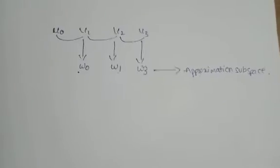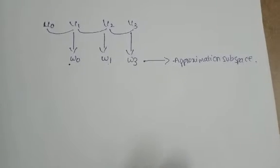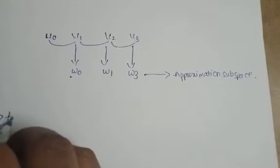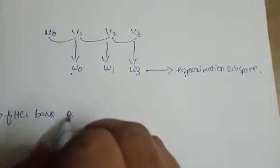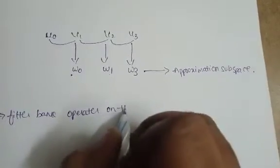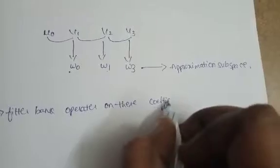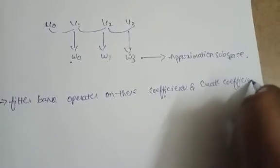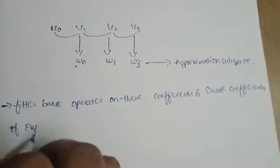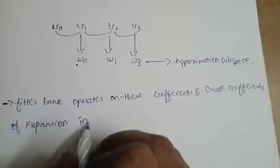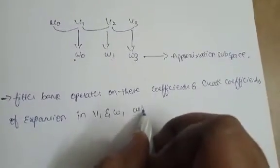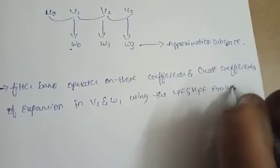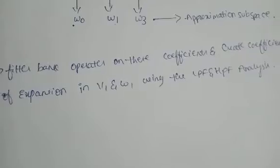In wave packet transformation, we also decompose the detailed subspace — not just the approximation. A filter bank is applicable here. The filter bank operates on these coefficients and creates coefficients of expansion in V1 and W1 using the low-pass filter and high-pass filter analysis.